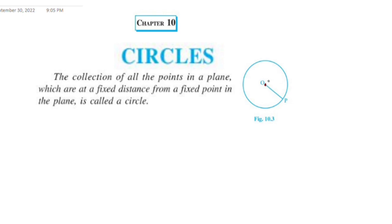The fixed point is called the center of the circle, and the fixed distance is called the radius of the circle.